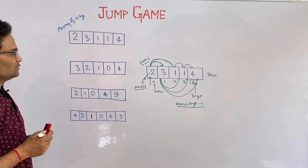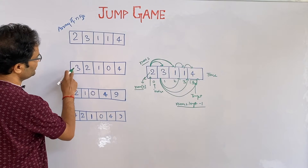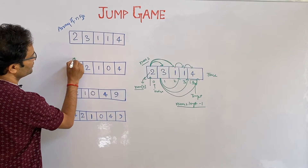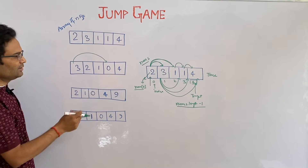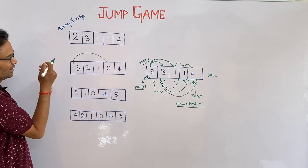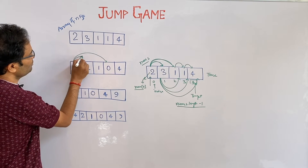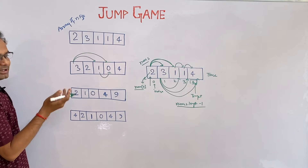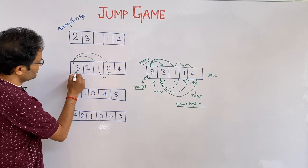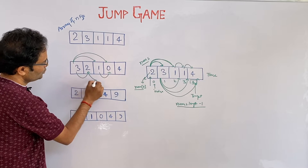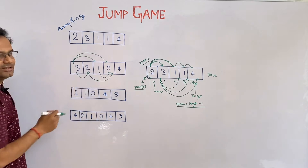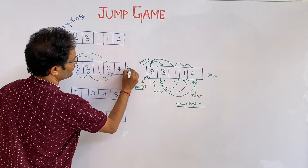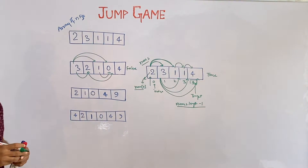Now check this case: can we reach or not? If you start from 3, you can go to 0 — you cannot move from 0 because the value is 0. From 3 go to 1, from 1 go to 0 — ending at 0 again, possibilities are not there. Third possibility: from 3 go 2, from 2 to 0 — again ending at 0, we are not able to reach the target element. So we return false.